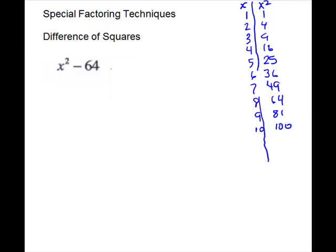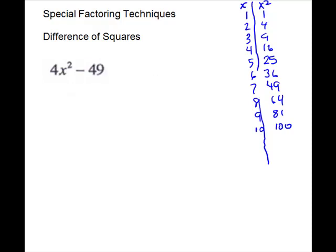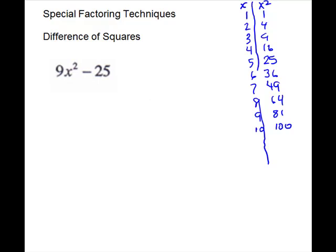For this problem, it is two terms — it's minus 64, which is a perfect square. So difference of squares is going to work. Do our parentheses — it's always different signs; that's how you get the middle to cancel. 64 is 8 times 8. For the next problem, it is two terms, it's minus, and it looks like perfect squares. The only difference is this one just has a number and a variable, but that's fine as long as they're squares. So we'll do our parentheses, always different signs. Square root of 4 is 2, and we'll need an x there. For 49, 7 times 7. For the next problem, we have two terms — it's minus. 9 is a perfect square, 25 is a perfect square, so we are going with difference of squares. Different signs: square root of 9 is 3 and also the x, and for 25, 5 times 5.